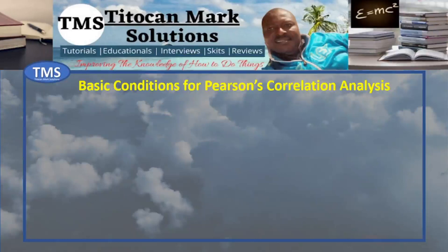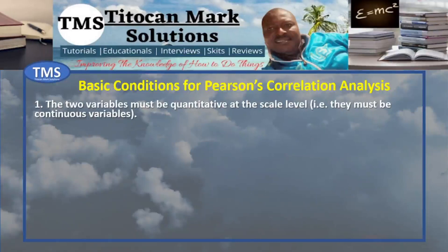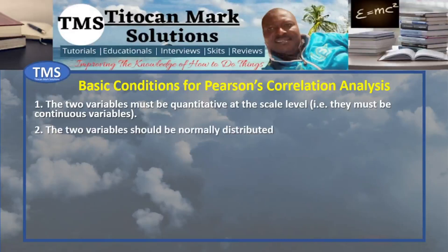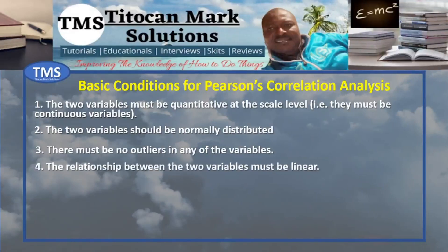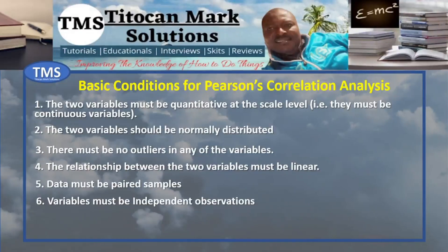For Pearson's Correlation to be conducted, there are a few conditions that must be met. The two variables must be quantitative on a scale level — that is, they must be continuous variables. The two variables should be normally distributed. There should be no outliers in any of the variables. The relationship between the two variables must be linear. Data must be paired samples, variables must be independent observations, and data must be randomly sampled.